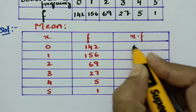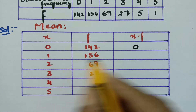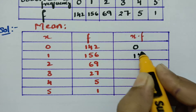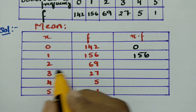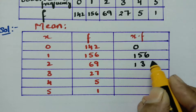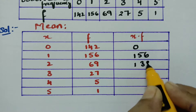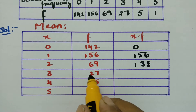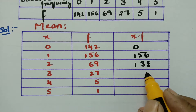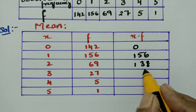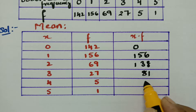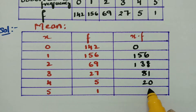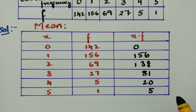0 into 142 is 0. 1 into 156 is 156. 2 into 69 is 138. 3 into 27 is 81. 4 into 5 is 20. And 5 into 1 is 5.